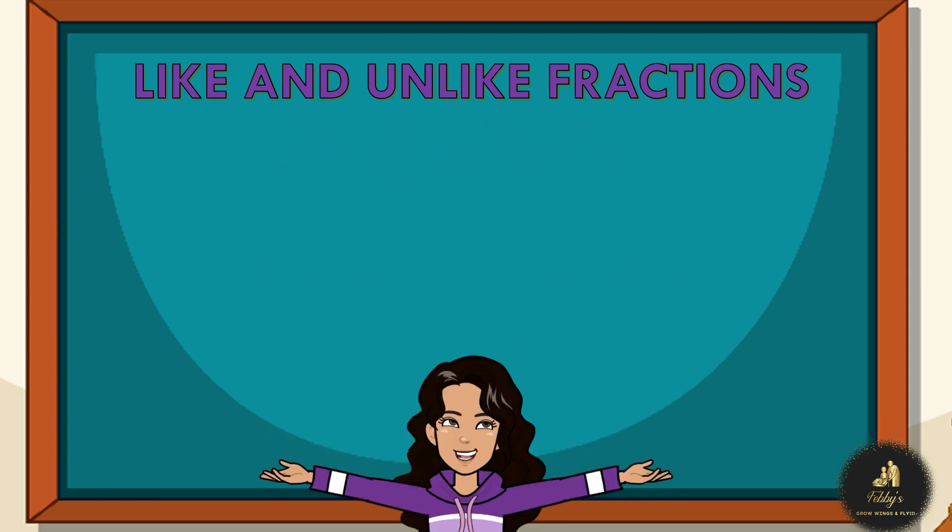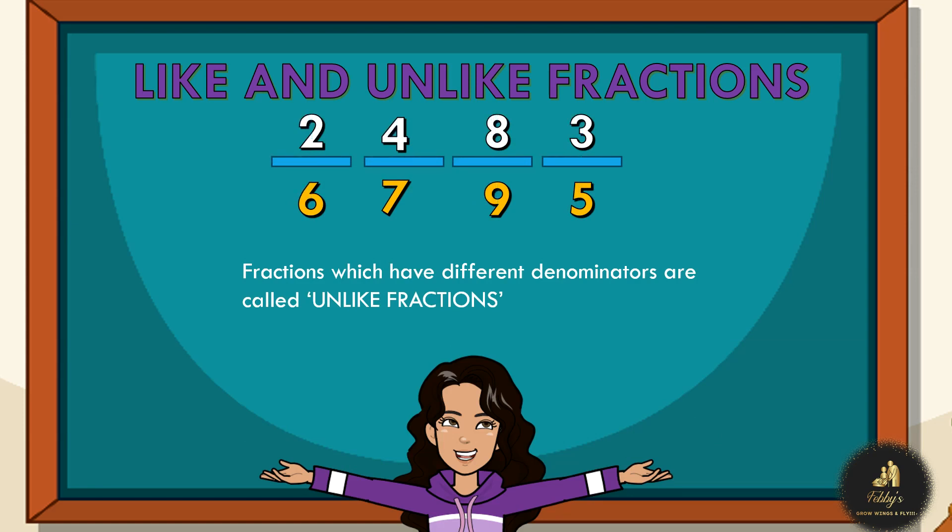Oh, Mr. Febby, in that case, I know what unlike fractions would be. Unlike fractions are fractions which have different denominators. Am I right? Yes, you are right. So, 2/6, 4/7, 8/9, 3/5. All of them have different denominators. So, they are unlike fractions.